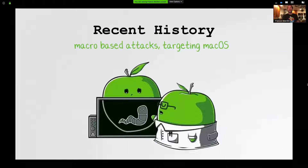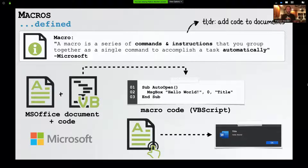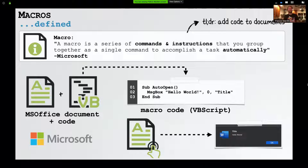Let's start by looking at some recent macro-based attacks targeting macOS users. First, let's define what a macro is. In short, you can think of a macro as embedded executable code in Microsoft Office documents, and this code is normally VBA. It allows you to add code to a document. For example, I've inserted a macro into a Word document to display a simple pop-up that says 'hello world' — about three lines of code. As we place this code within the auto-open subroutine, if the user has enabled macros and opens this in a Microsoft Office product, this code will be automatically executed.